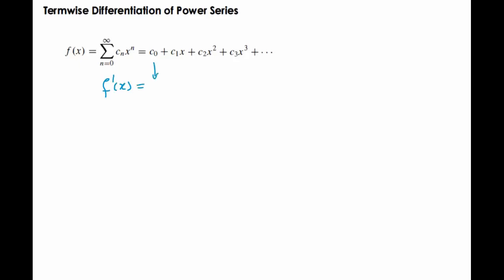So the derivative of this is 0 plus the derivative of this is c₁ plus the derivative of this is 2c₂x plus the derivative of this is 3c₃x² plus dot dot dot. And that means that what's happening is we can see the pattern here is basically ncₙx^(n-1) as expected.